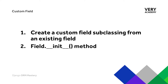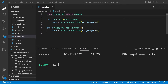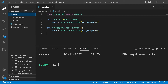I'll give you a quick rundown of what we're going to be covering in this section to help guide you. In this particular tutorial, we're going to create a new custom field subclassing from an existing field, discuss the initialization method, and look at some of the different features it offers. This is the project we're working with — you can apply this to your own application or download the code from the video resources.